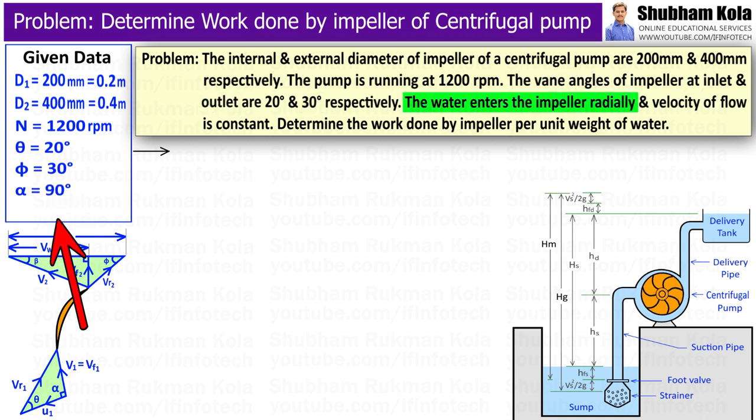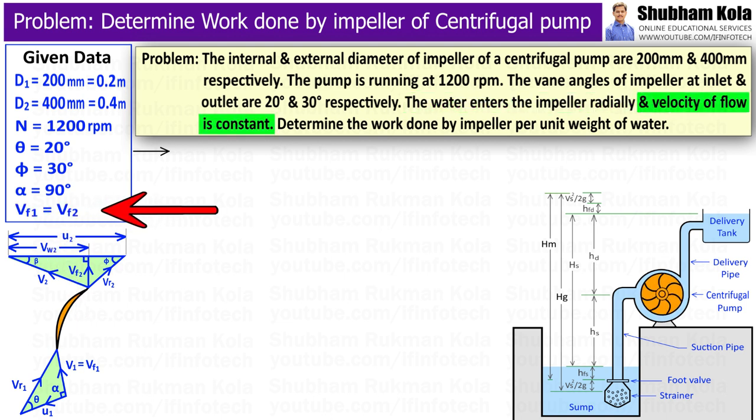And here entry of fluid is radial, that is 90 degree. And velocity of flow at inlet and outlet is constant, that means Vf1 equal to Vf2.